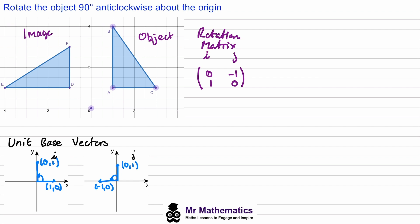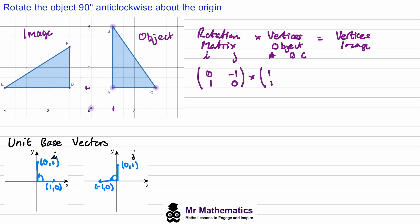We're going to apply this rotation matrix to each of the vertices in our object. The rotation matrix multiplied by the vertices of the object will give us the corresponding vertices of the image. The vertices of object ABC are: A = (1, 1), B = (1, 4), and C = (3, 1).